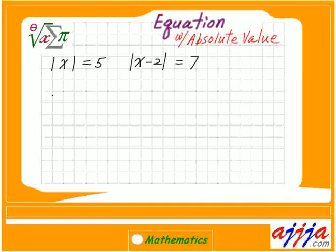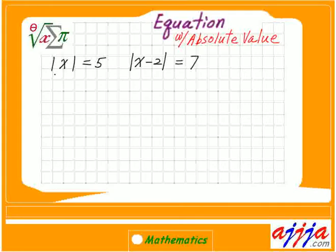Absolute value. Equation with absolute value. On our left hand side, our absolute value of x is 5. You have to treat this one like two questions.